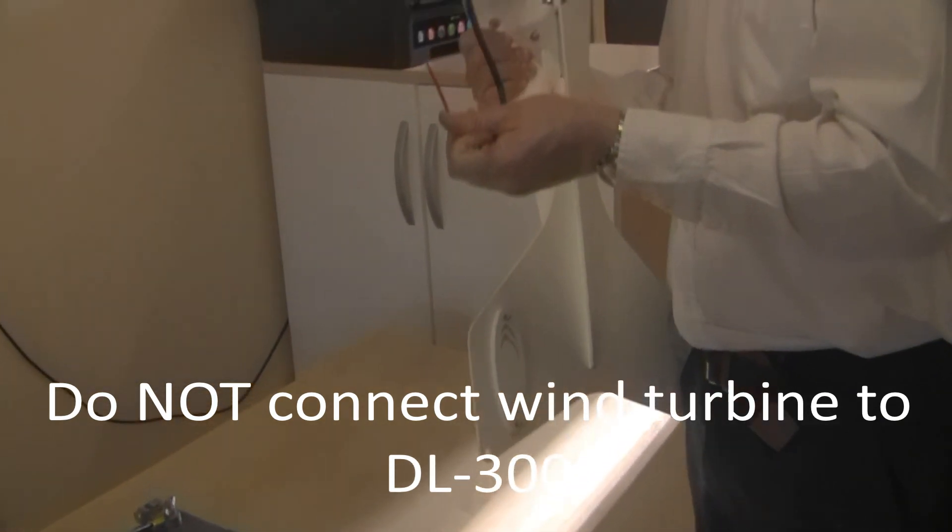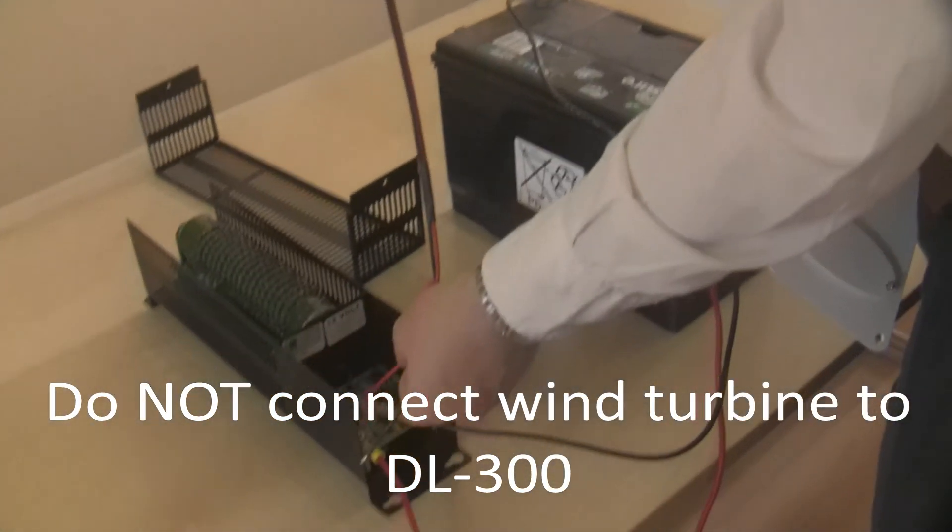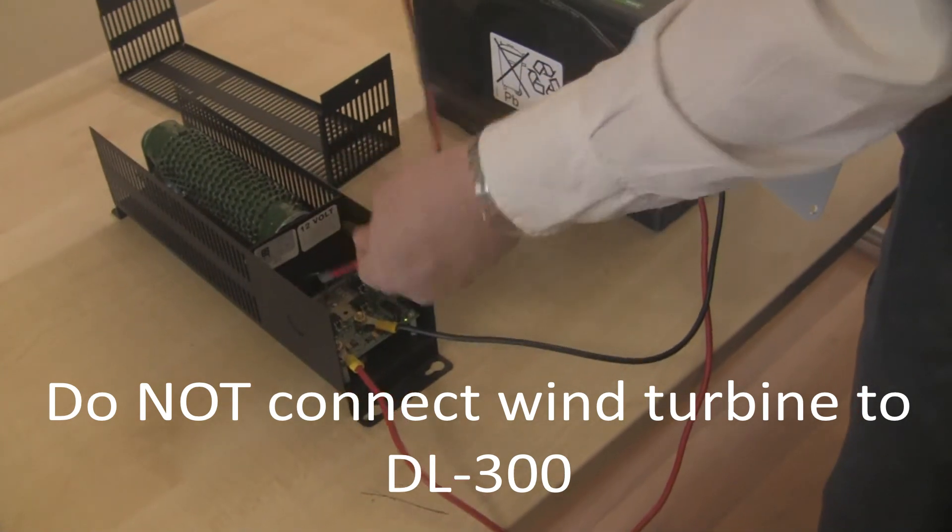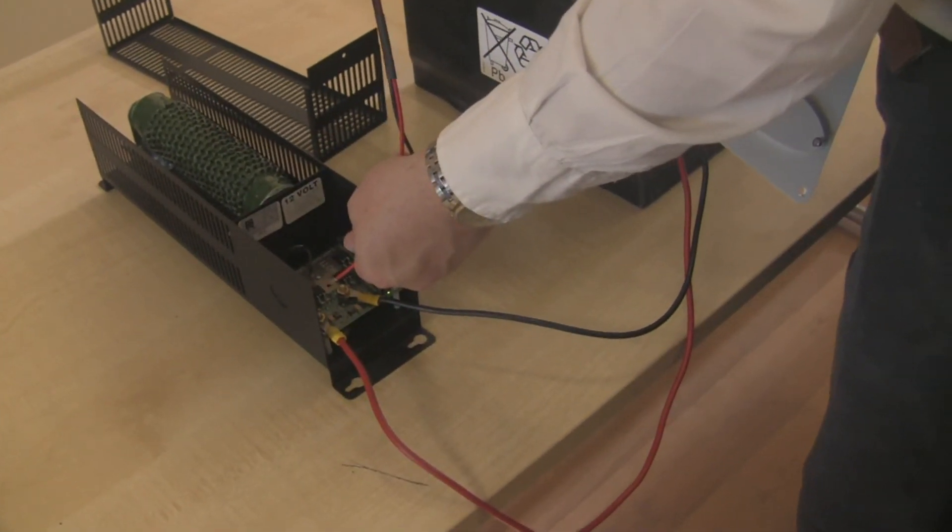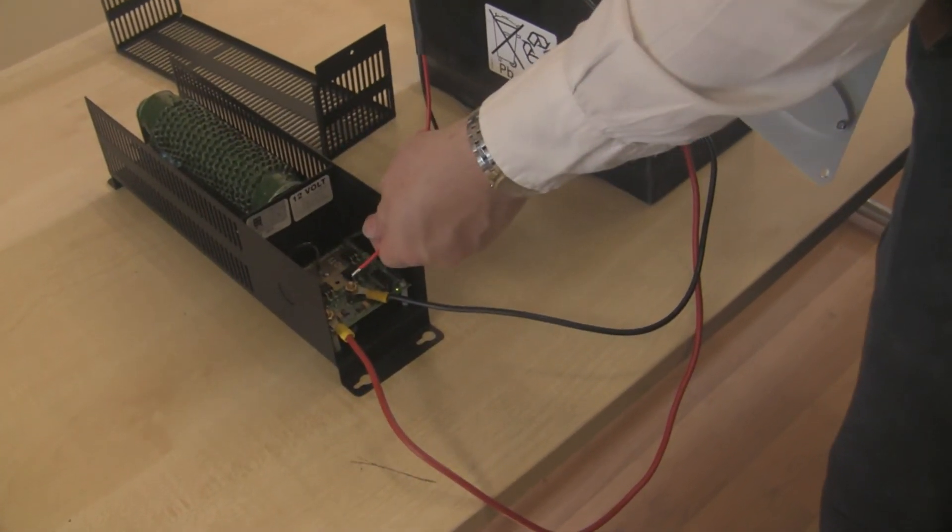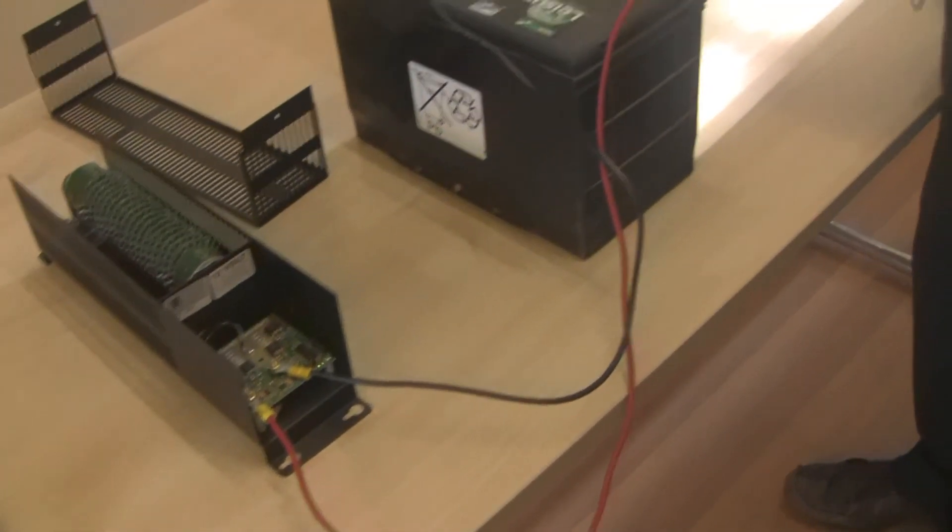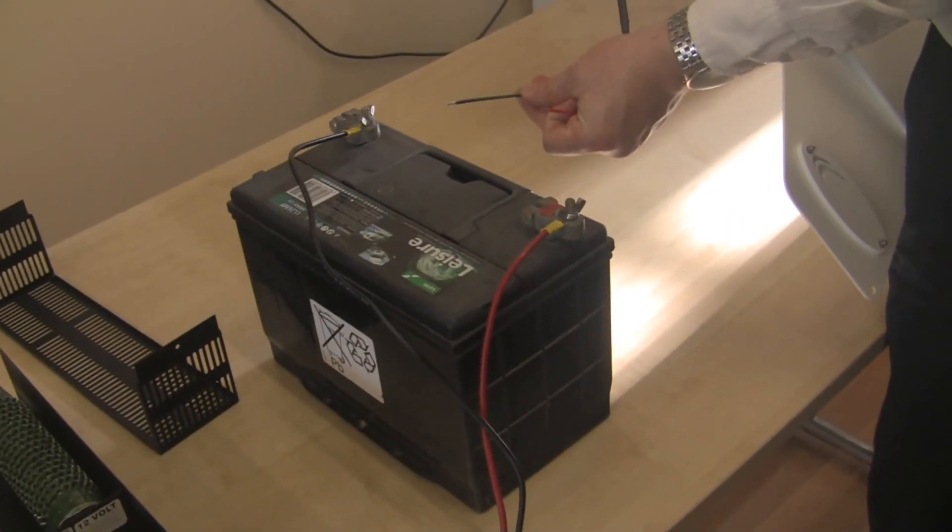What you should not do is connect the positive of the wind turbine to any of the terminals in the charge controller. In all circumstances really, you need to make sure the turbine goes to the battery terminals to avoid any problems with the system.